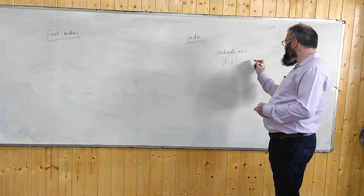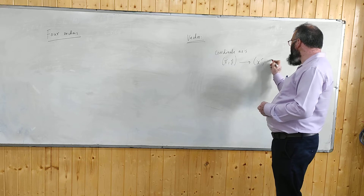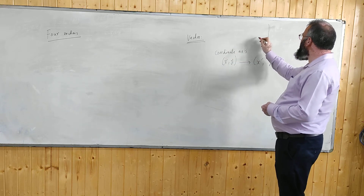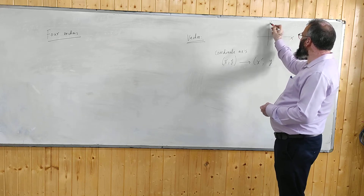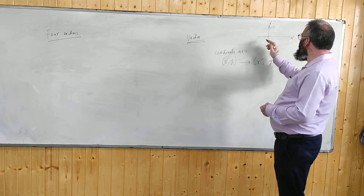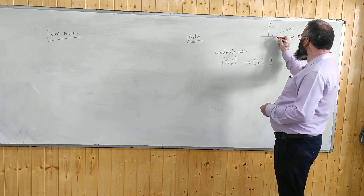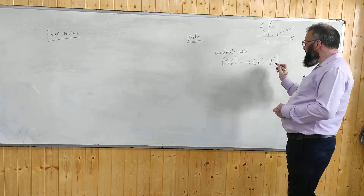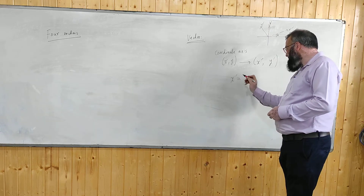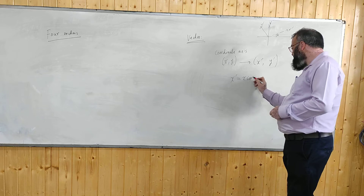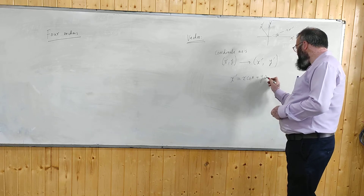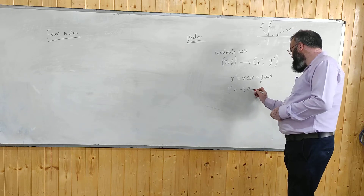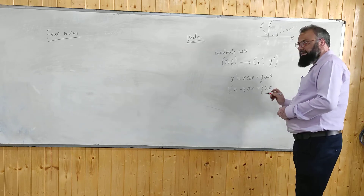If these are under transformation from x, y — if you rotate your coordinate system, let us say you are having a coordinate system x and y and you rotate it to an angle theta — so they will transform this way: x prime is equal to x cosine of theta plus y sine of theta, and y prime is equal to minus x sine of theta plus y cosine of theta.